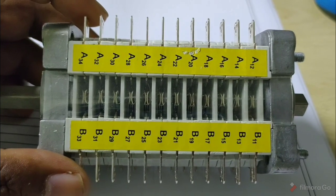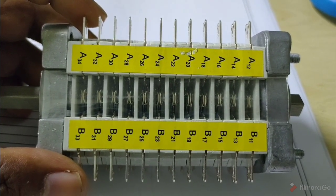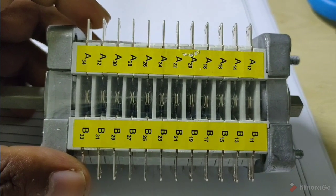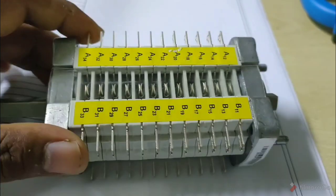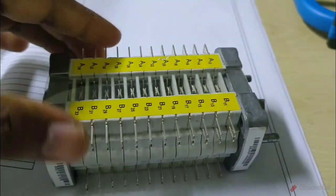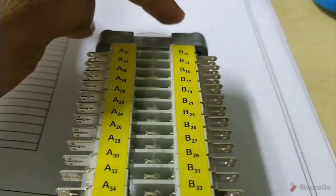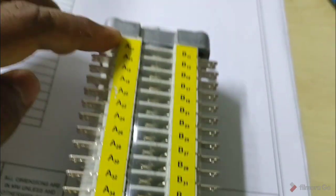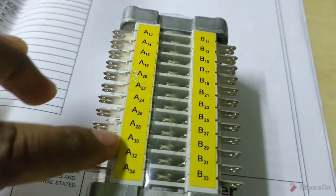The A terminals are labeled 12, 14, 16, 18, 20, 22, 24, 26, 28, 30, 32, and 34. These are the A contacts and the B contacts. These are all even-numbered contacts.